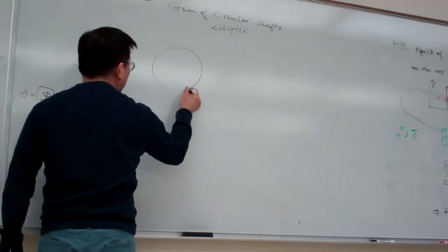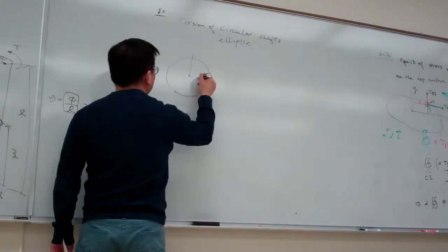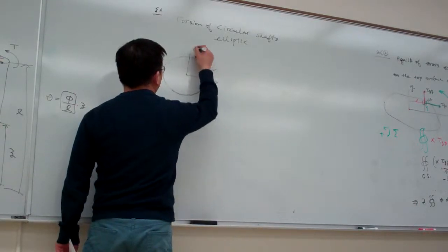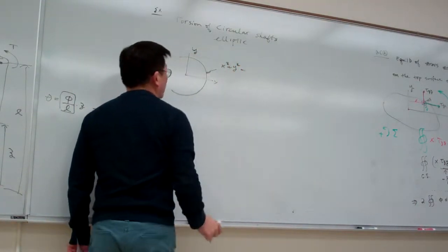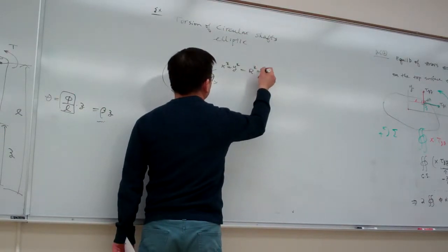So for circular shaft, we have the profile is xy, for example, x squared plus y squared minus r squared equal to 0.